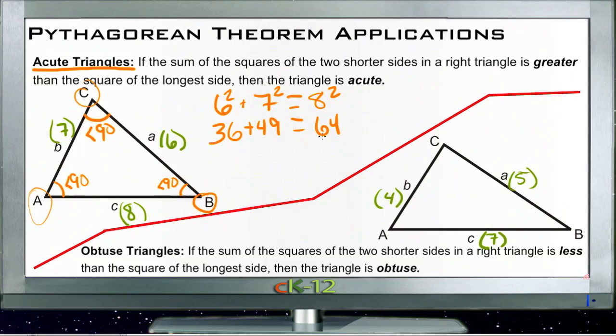Obviously 36 and 49 is more than 84. We're looking at what, 70, 85. So 85 is greater than 64. Well, if your a plus b sides are a greater number when they're squared than the c side is, then these two legs here stick out too far.